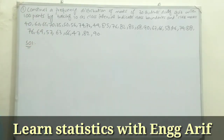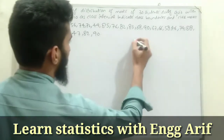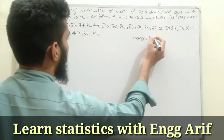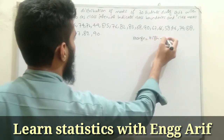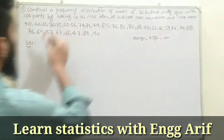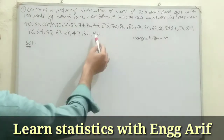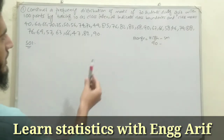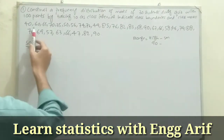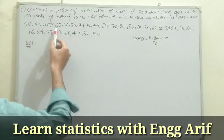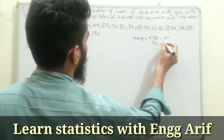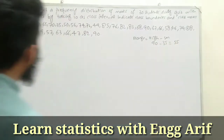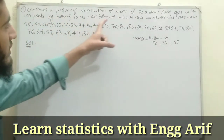First we are going to find the range. The formula for range is: highest number minus smallest number. In this data the highest number is 90, and the smallest number is 35. So 90 minus 35 gives us 55.